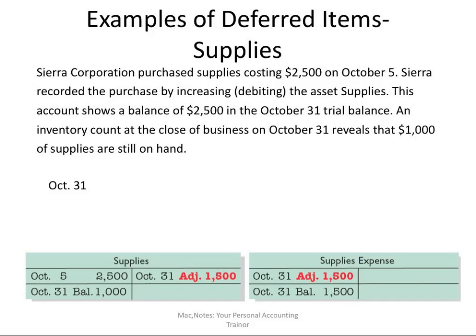The same goes for assets that have been purchased, such as supplies. They cost $2,500, bought on October 5th and put in the cupboard. During the month, some of these supplies were used up. At the end of the month, we check and see that only $1,000 is left. So obviously, $1,500 has been used up. We need to reduce the asset and recognize the expense.